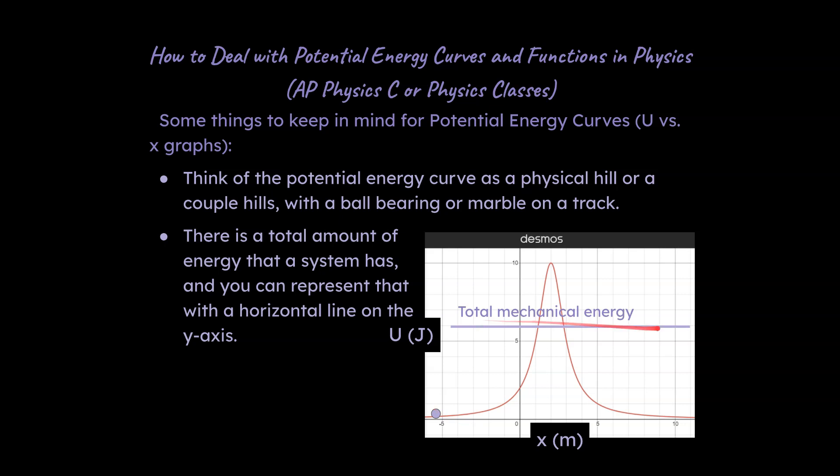Secondly, there is a total amount of energy that a system has, so that would be the total mechanical energy like the sum of the potential and the kinetic energy, and it never gets above that. Assuming you don't have any extra forces aside from gravity being added to the system, you're not going to increase or decrease the total mechanical energy, and I'll show that in a slightly different way in a couple slides.